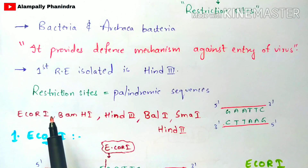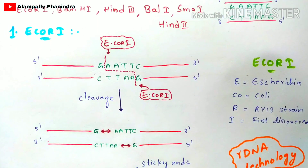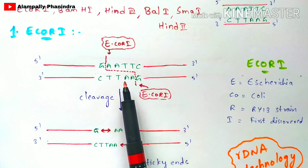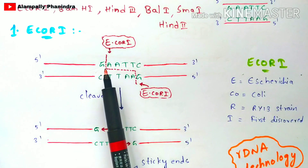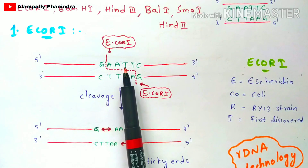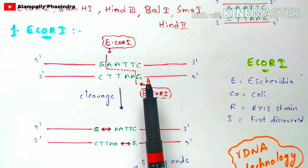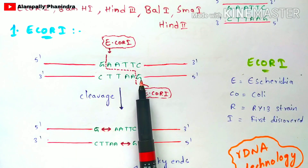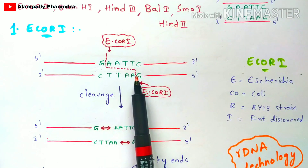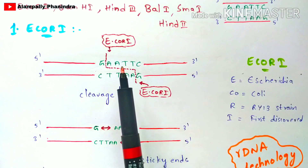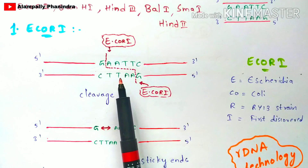Let us discuss about EcoRI — how it performs its function on double-stranded DNA. This is a sequence called a restriction site. You can determine this as a restriction site because of the presence of a palindromic sequence. If you read GAATTC from 5' to 3' on the first strand, and again 5' to 3' on the second strand, the nucleotide sequence is the same — GAATTC. Both strands are similar when read 5' to 3', and those sequences are called palindromic sequences. The presence of a palindromic sequence means this site is a restriction site.